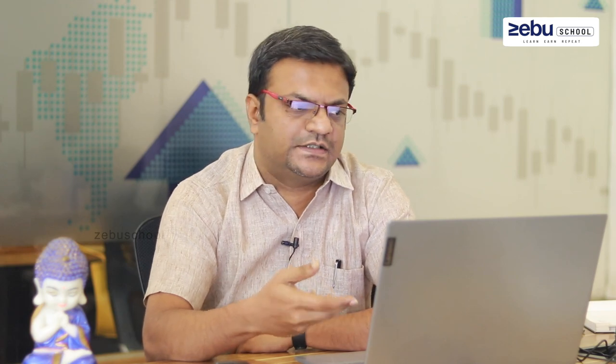In this option buying strategy we have to follow some additional tricks to get more profitability in this option straddle strategy. First, what is option straddle? We need to take two positions — purchasing both a call and a put option in the same underlying asset, same expiry date, and same strike price. There are three criteria: underlying asset same, strike price same, and expiry date same. These three things should be the same for the option straddle. This is the first preliminary criteria.